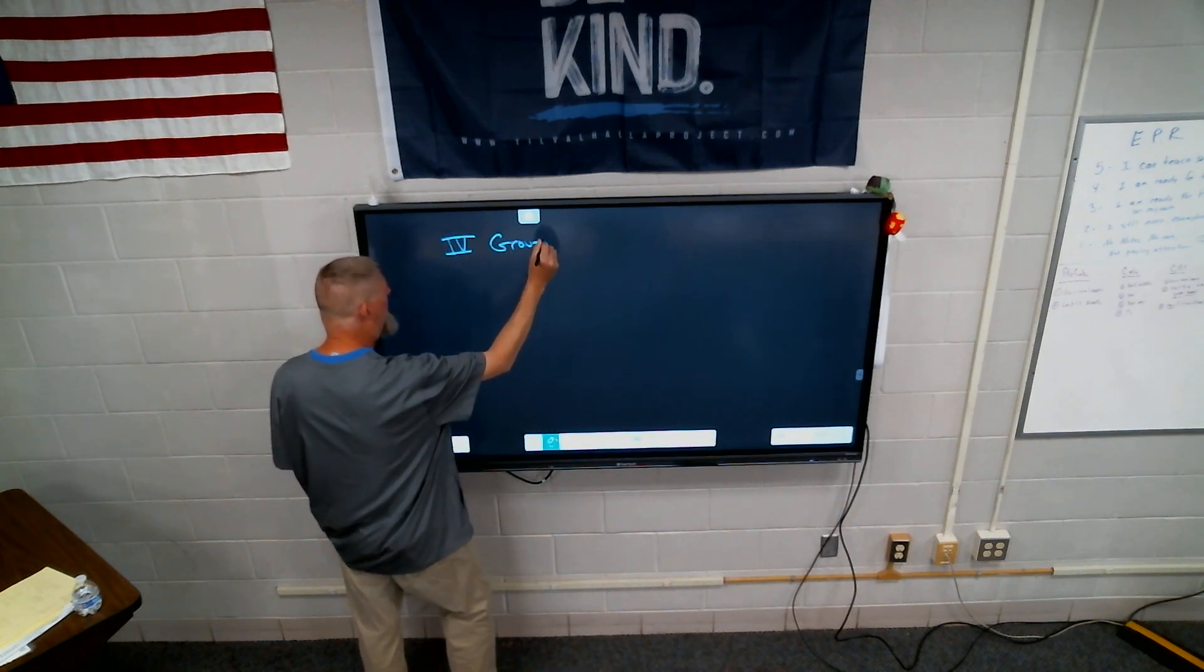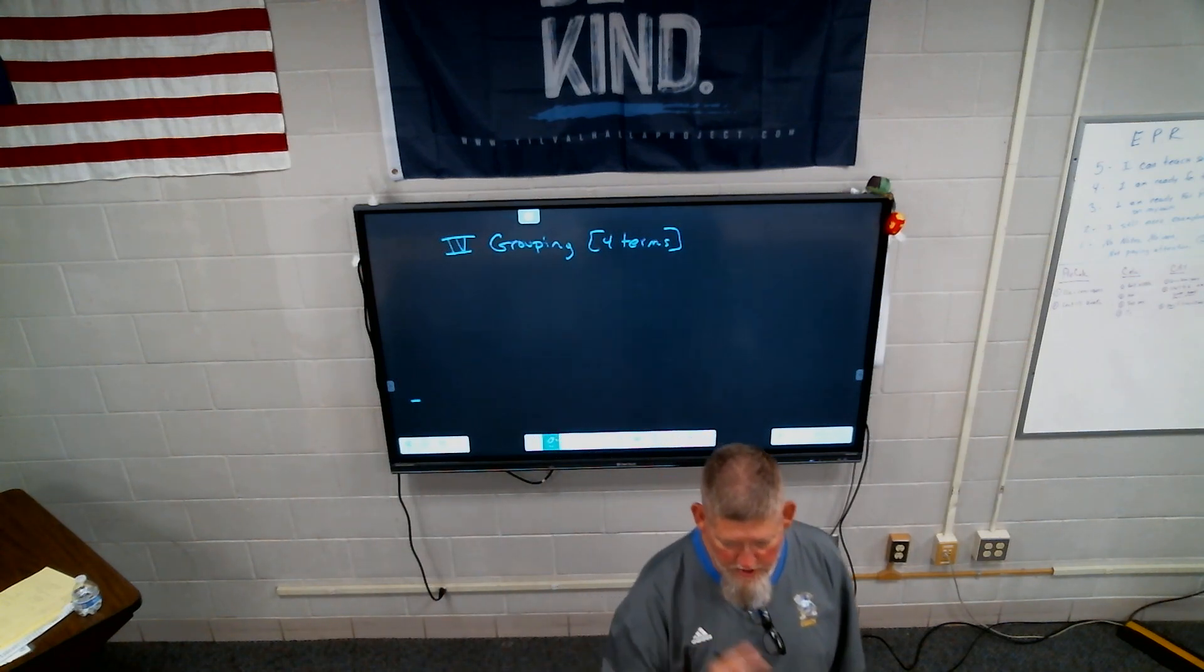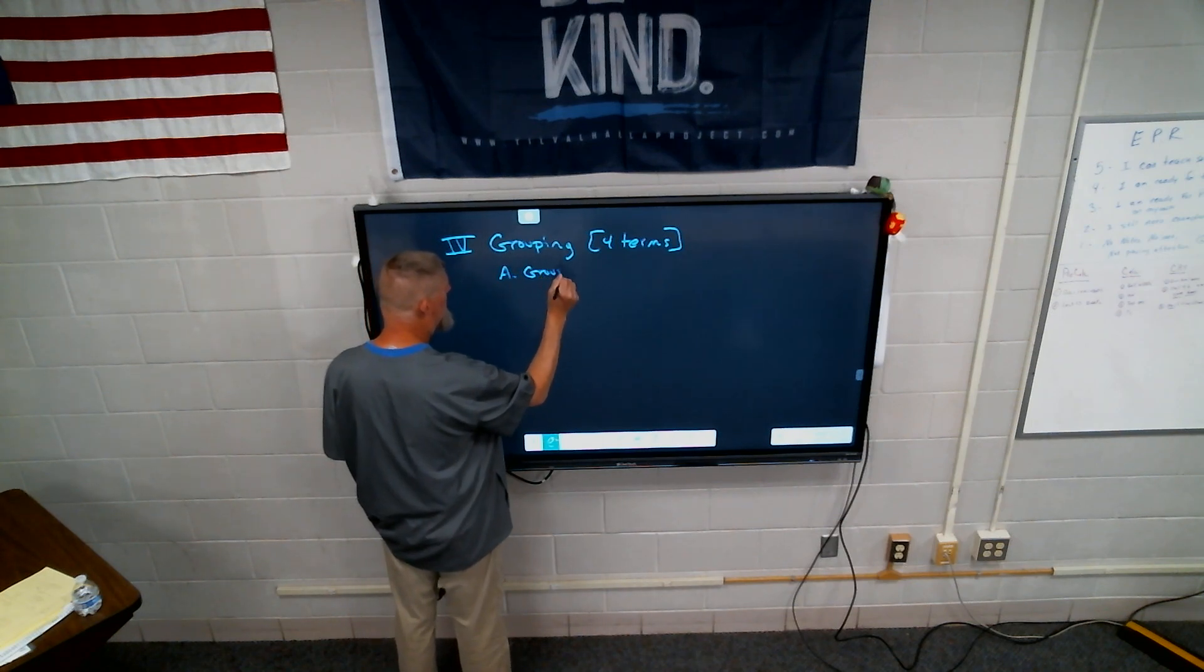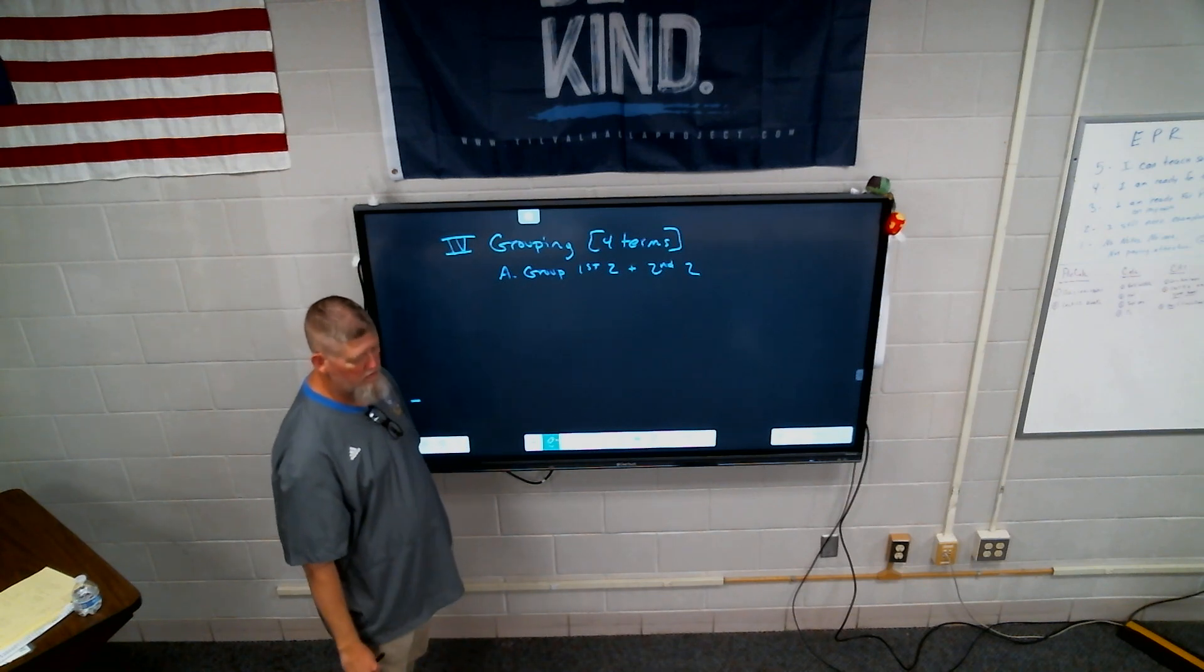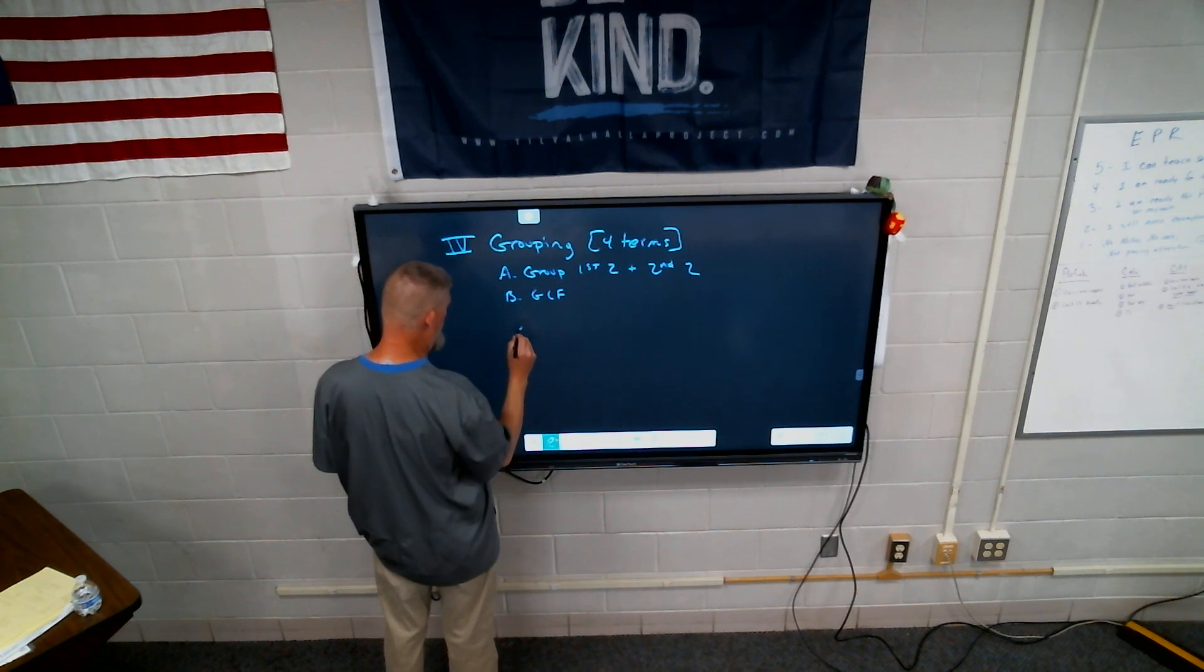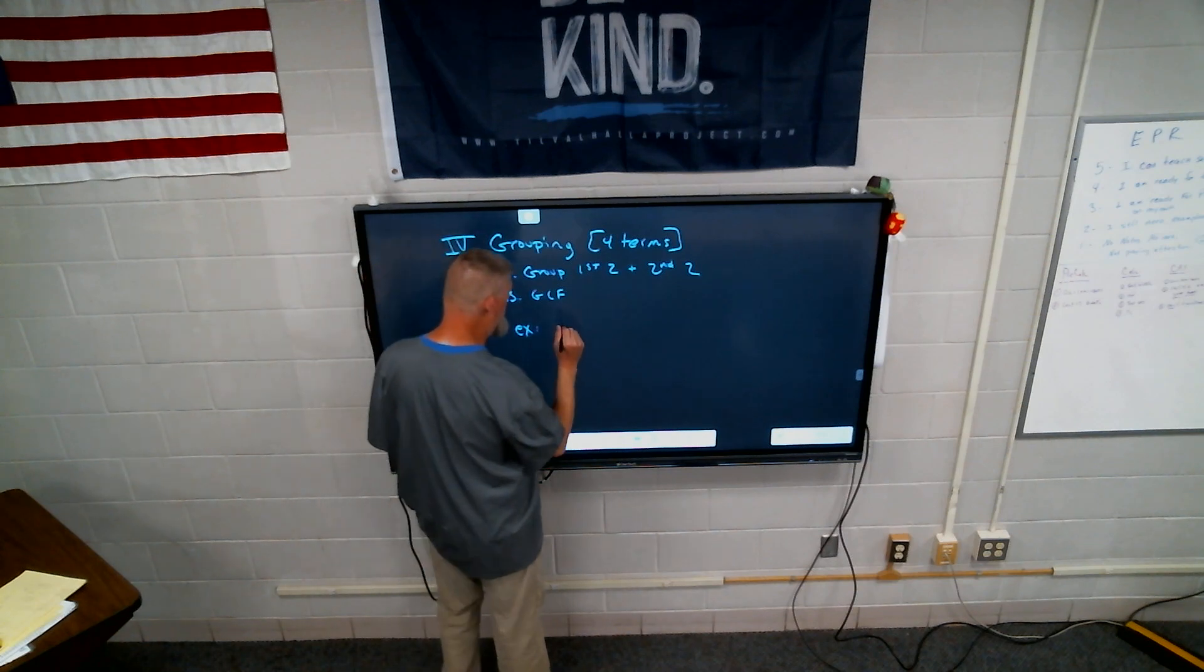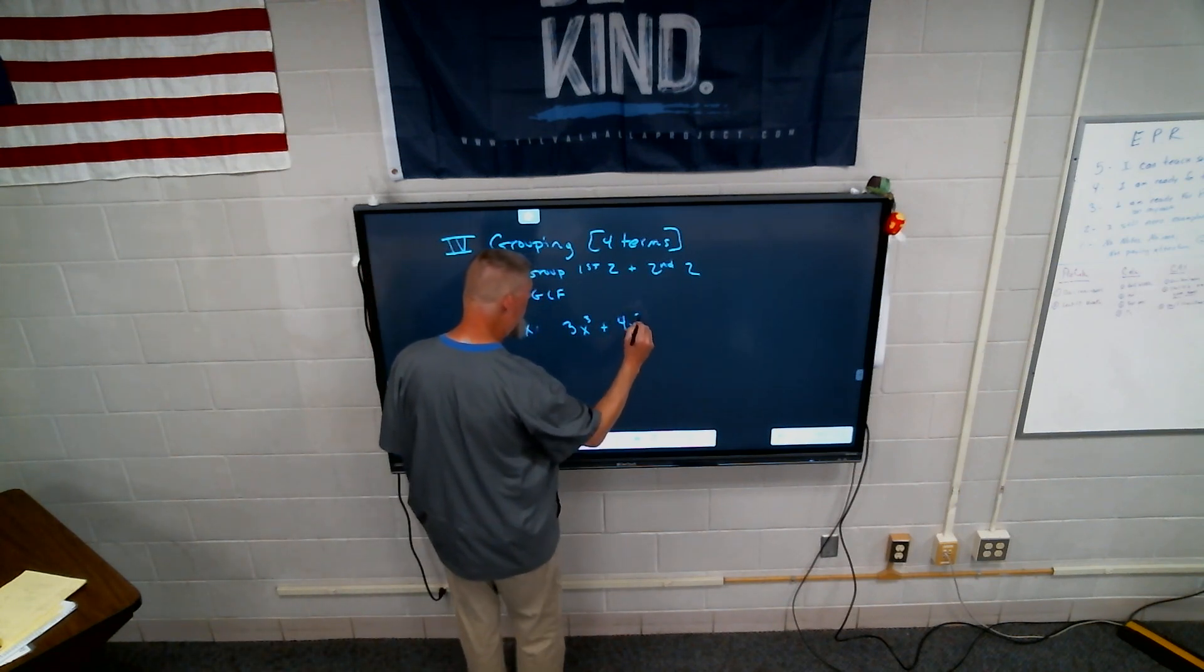So that leads us to Roman numeral 4. Grouping. And this is when you're going to have four terms. So I tried to make the notes fairly simple. One, you always do greatest common factor. Two is if you have two terms. Roman numeral 3 is if you have three terms. Roman numeral 4 is if you have four terms. We won't get anything bigger than that. So all you're going to do is very simply, you're going to group it. Group the first two and the second two.